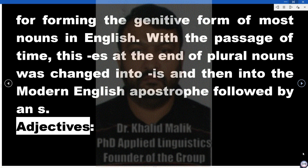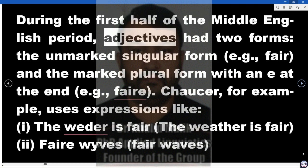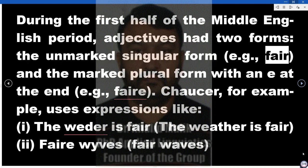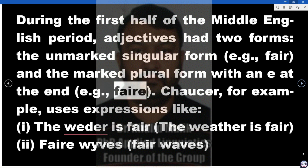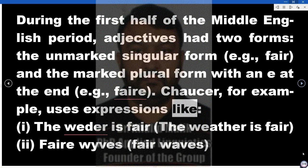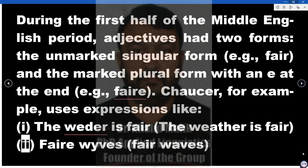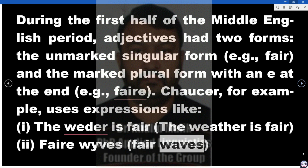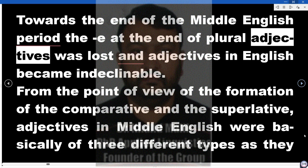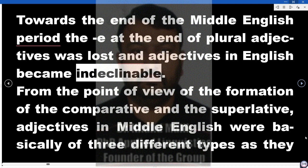Adjectives. During the first half of the Middle English period, adjectives had two forms: the unmarked singular form (e.g., 'fair') and the marked plural form with an -e at the end (e.g., 'faire'). Chaucer, for example, uses expressions like 'the weather is fair' and 'fair wives' (faire wives). Towards the end of the Middle English period, the -e at the end of plural adjectives was lost and adjectives in English became indeclinable.